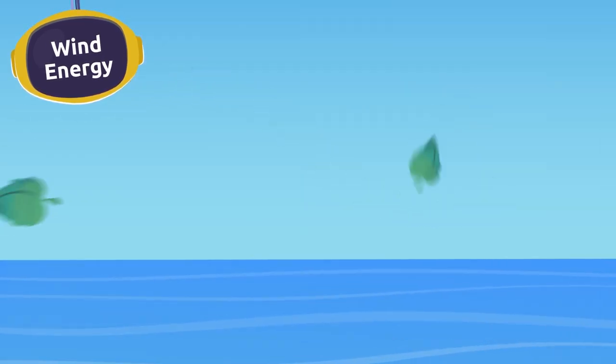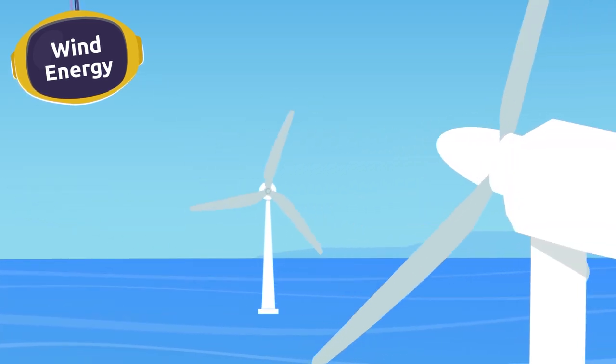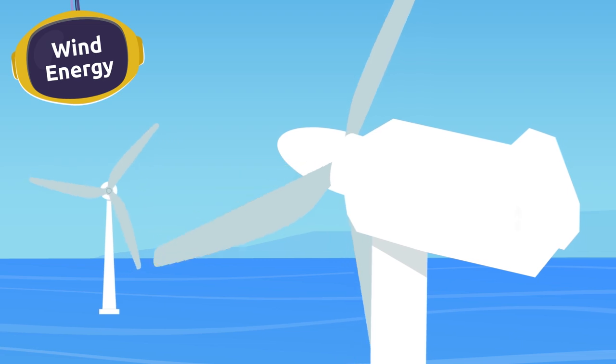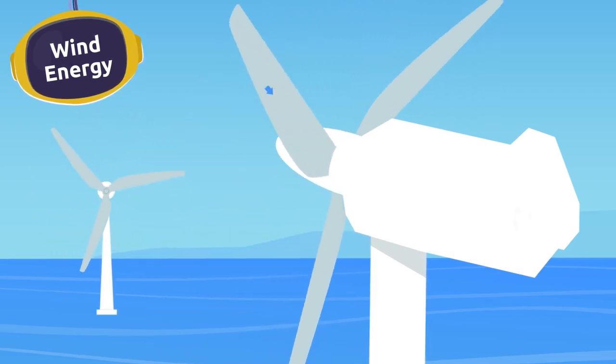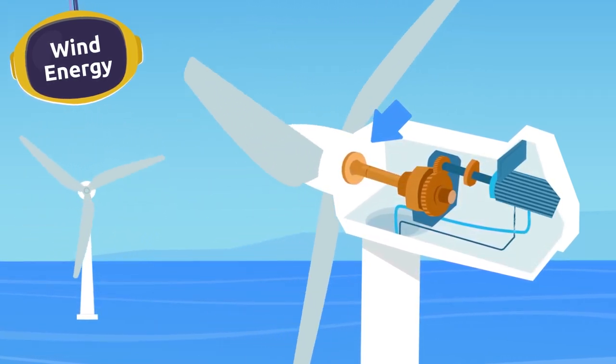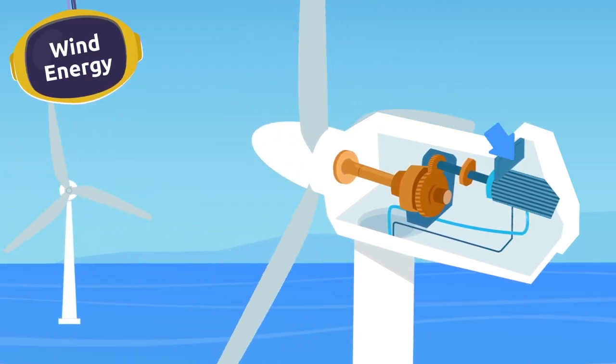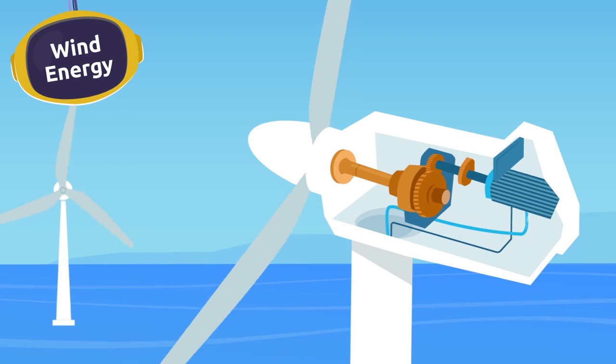Another way we can get electricity is by using the force of the wind, in other words, wind energy. Have you ever seen wind turbines? When the wind blows and pushes the blades of the wind turbines in a circular motion, it also turns a shaft which activates the generator, producing electricity.